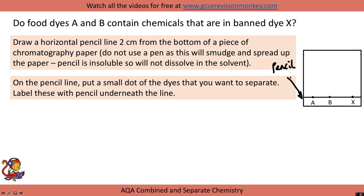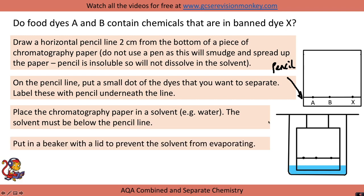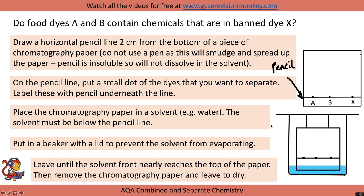On the pencil line, put a small dot of the dyes you want to separate and label these with pencil underneath — so label them A, B, and X. Place the chromatography paper in a solvent, for example water. The solvent must be below the pencil line. Put it in a beaker with a lid to prevent the solvent from evaporating.